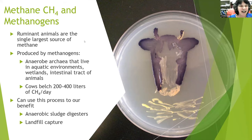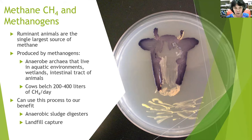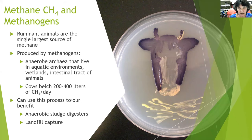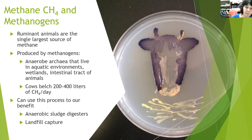Just a quick point about methanogens: ruminant animals are the single largest source of methanogens and can contribute significantly to global warming. Methanogens also live in aquatic environments, wetlands, and the intestinal tract — you could even have a methanogen in your gut. Cows belch 200 to 400 liters of methane a day, which is a lot. One thing we can do that benefits us using methanogens is anaerobic sludge digesters or landfill capture, where we actually capture that methane gas and use it as a fuel source. That's one way they're beneficial for us.